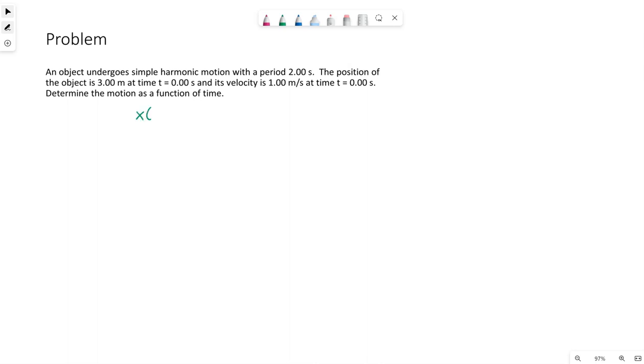So we're trying to write an equation that describes the position of this object, whatever it might be, as a function of time. In terms of what they've given us, they've told us the period is two seconds. The position at time equals zero, so my initial position is three meters, and its velocity initially is one meter per second.